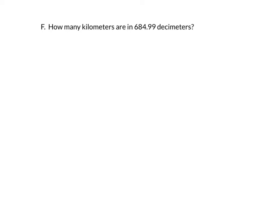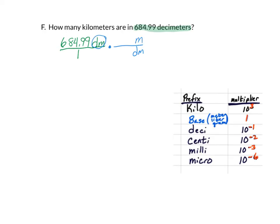I've added a few extra problems, so let's try F: how many kilometers are in 684.99 decimeters? Go ahead and pause while you solve it. We start with 684.99 decimeters over 1. We put decimeters on the bottom and meters on the top — always go to that base unit. From our chart, 1 decimeter equals 10 to the minus 1 meters, so the decimeters cancel and our answer is currently in meters.